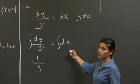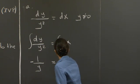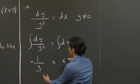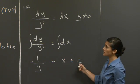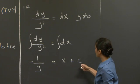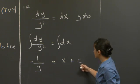And the right-hand side, integral of dx, is just x. Both sides would give us a constant of integration, but we only need one because this is a first-order differential equation. We group them together on the right-hand side with constant c.